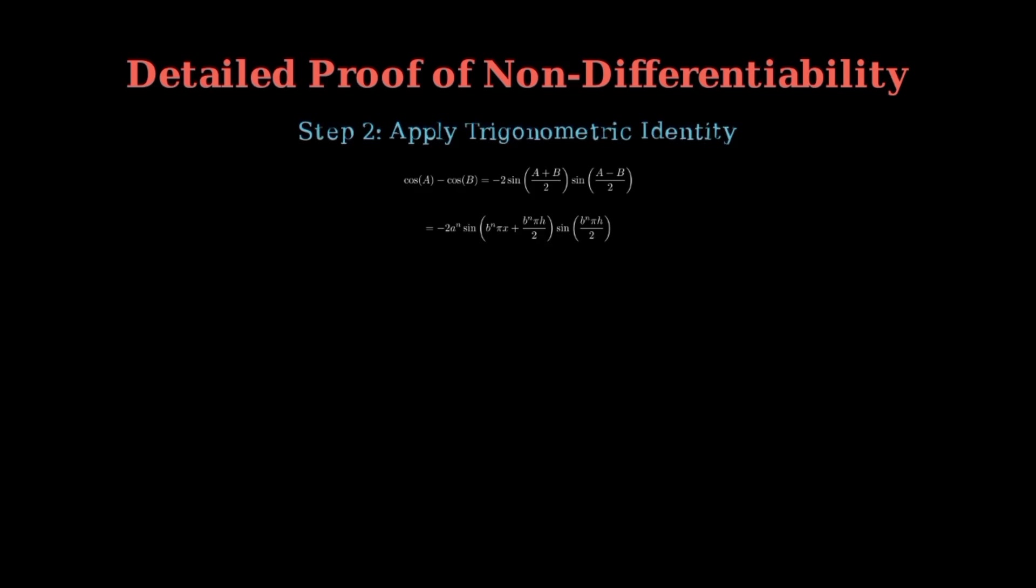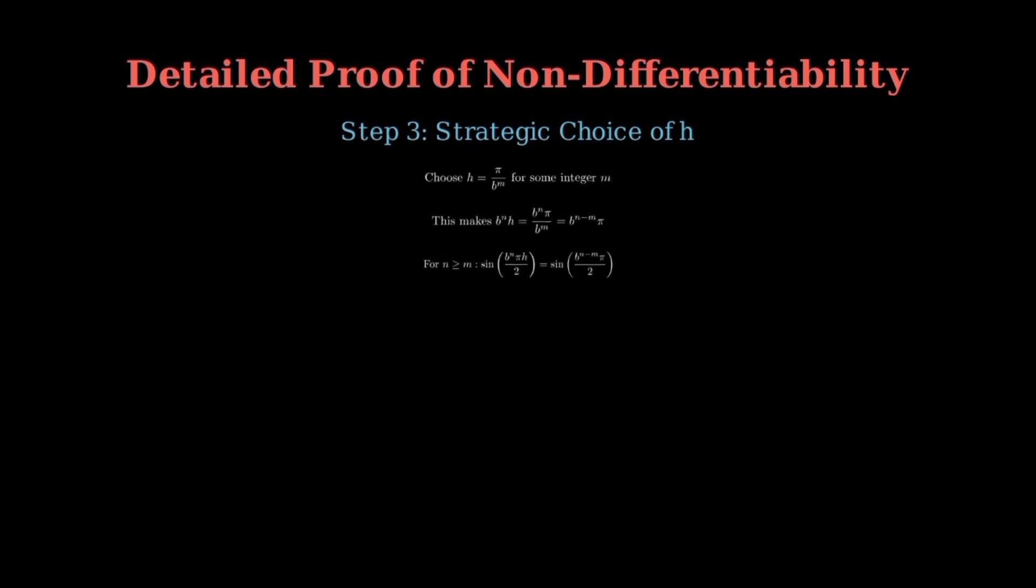Here's the brilliant strategic move. We choose h equals pi over b to the m for some positive integer m. This choice makes the calculation tractable and reveals the function's true nature.